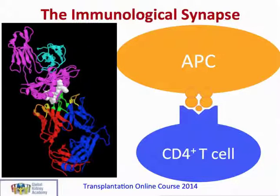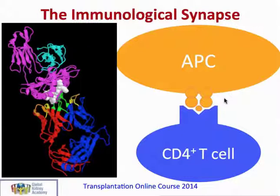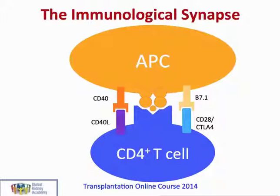This interaction between the cells is often called the immunological synapse, shown here in diagrammatic form and also in a molecular string diagram on the left. Central to this process is the interaction between the T cell receptor and the foreign HLA molecule with its bound peptide on the donor antigen presenting cell — known as signal 1 — which initiates the interaction between the two cell types. The interaction also depends on co-stimulatory molecules: CD40 ligand on the T cell and CD40 on the antigen presenting cell, and also CD28 or CTLA4 on the T cell and the B7 group of molecules on the antigen presenting cell. Signalling from these sets of molecules forms what we call signal 2.